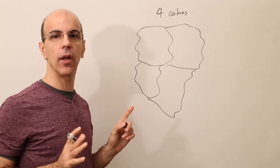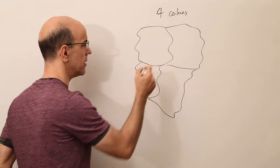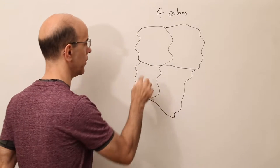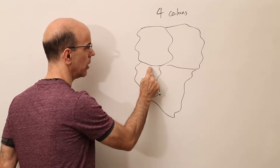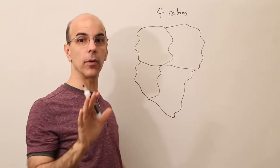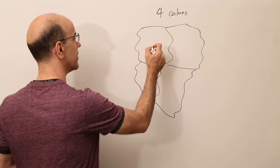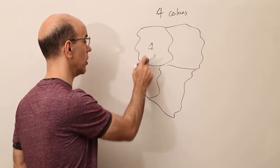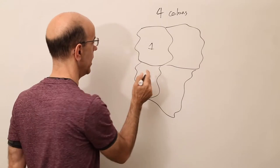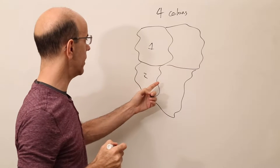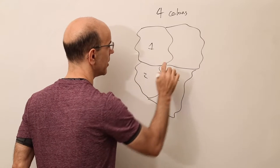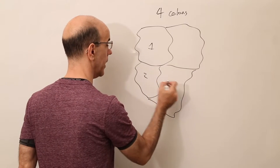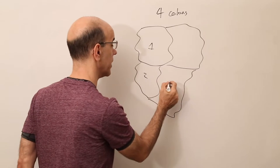They had one little limitation: they didn't want two adjacent areas to share the same color. So if this space and this space share a border, then they must be different colors. I'm going to put numbers in place of colors. So let's say we color this with color one. We can't color the next one with one because they share a border — so that's got to be number two. And this one here shares a border with one, so two has to be its own color. It can't be two because it shares a border with two, so we'll make that color three.